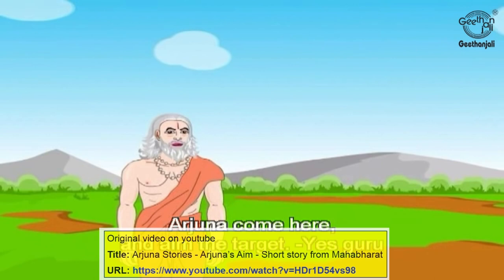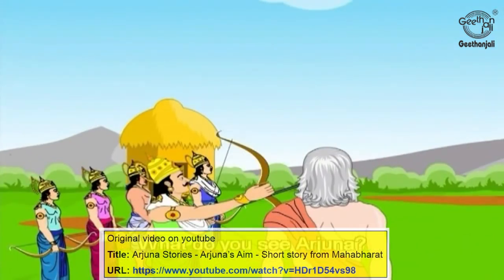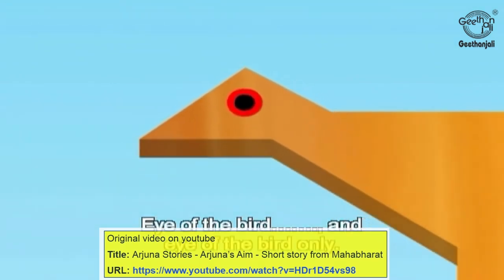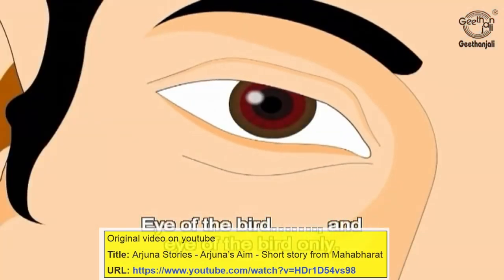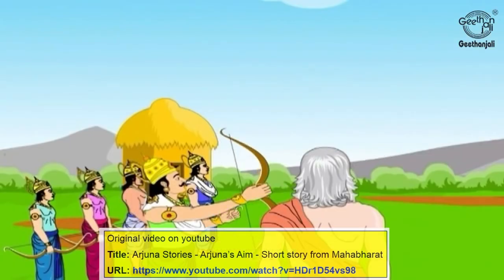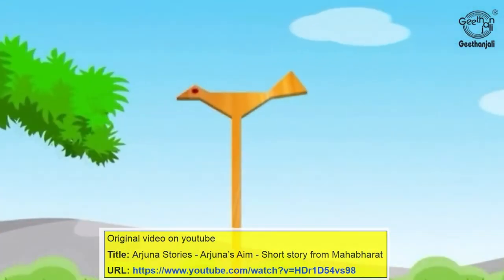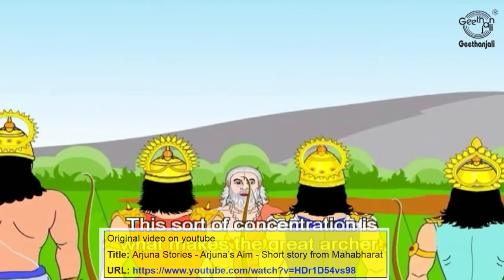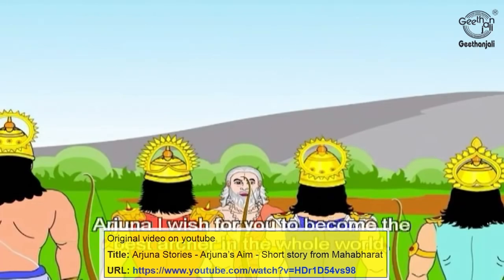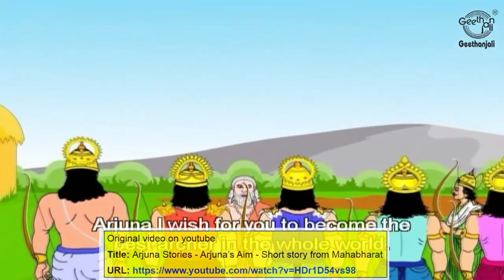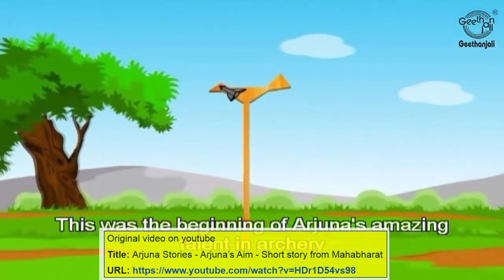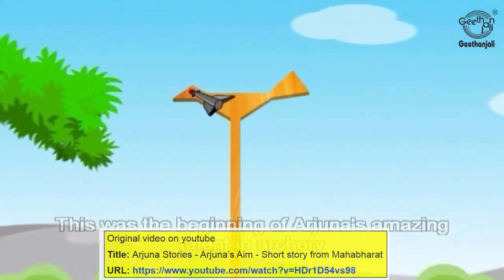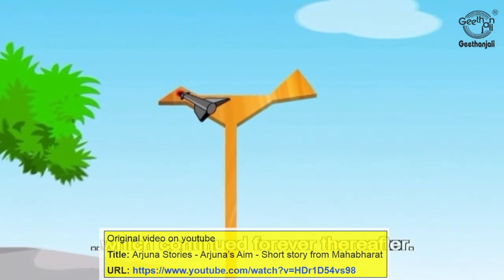Arjuna was called forward and asked what he could see. He answered: 'The eye of the bird, and the eye of the bird only.' Drona instructed him to shoot, and Arjuna succeeded. Drona praised him: 'This sort of concentration is what makes a great archer — I wish for you to become the best archer in the whole world.' This was the beginning of Arjuna's amazing talent in archery, which continued forever thereafter.